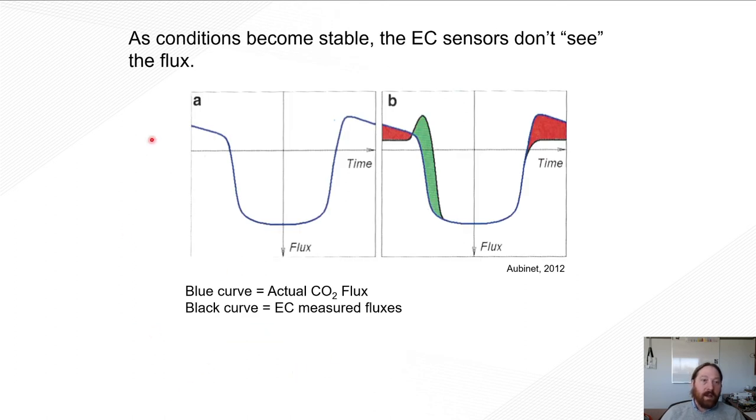Okay, so again, let's, this figure is from Aubinet 2012 and really showcases the storage term. Okay, so if we have a blue line, which is our EC measure, or I'm sorry, our actual CO2 flux in this case, and we have a black line, which represents, sorry, right here, black line, which represents what our tower is measuring, our eddy covariance system is measuring, we can see that there's a discrepancy in the actual flux in what we see, where the red means that the eddy covariance system is underestimating it, and the green is overestimating. So you can imagine overnight, we're underestimating the flux because we get this buildup of CO2 underneath our sensor.